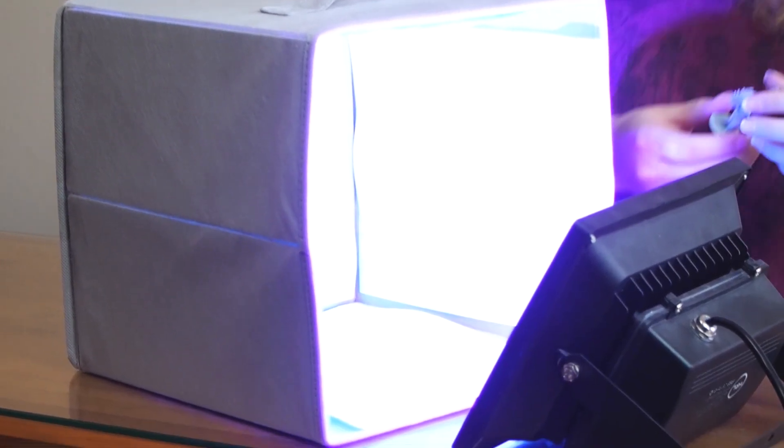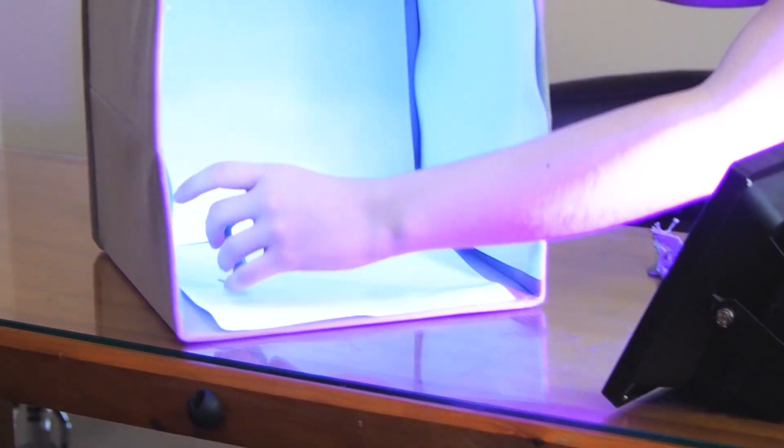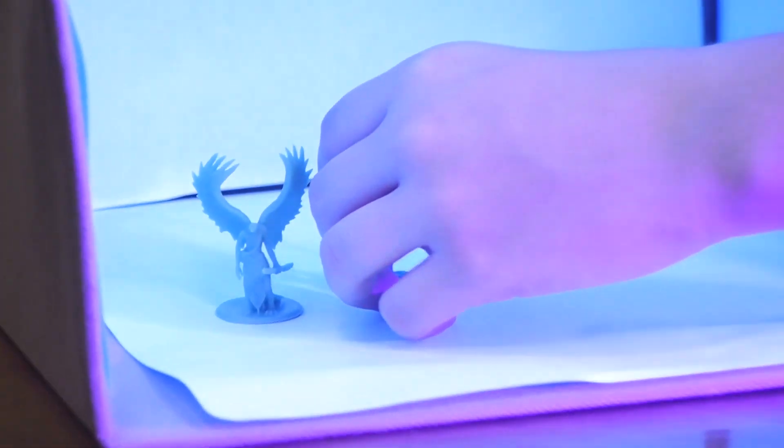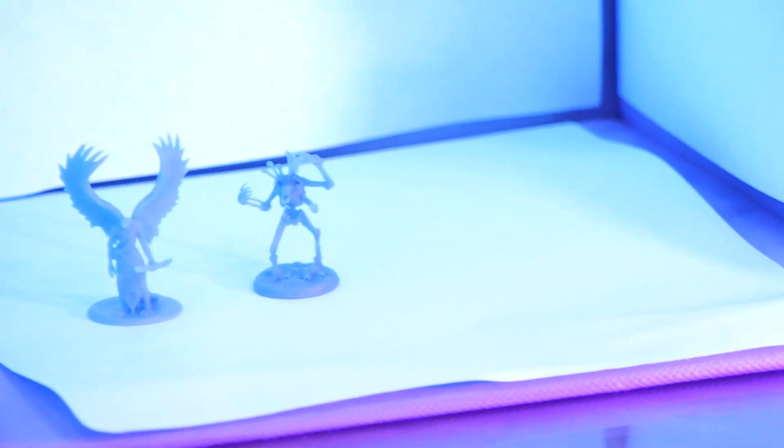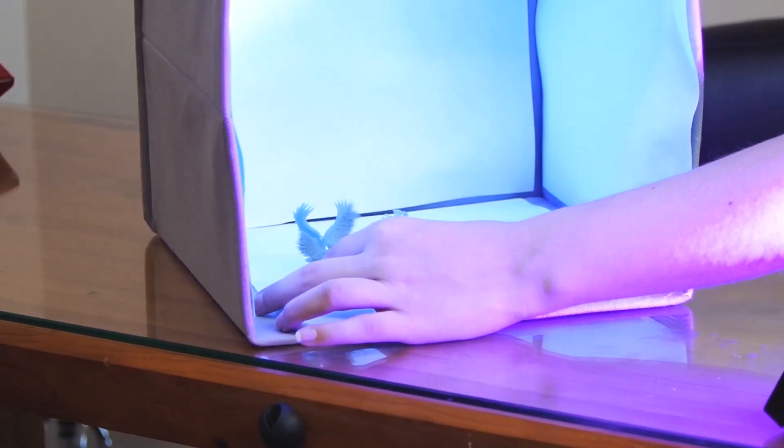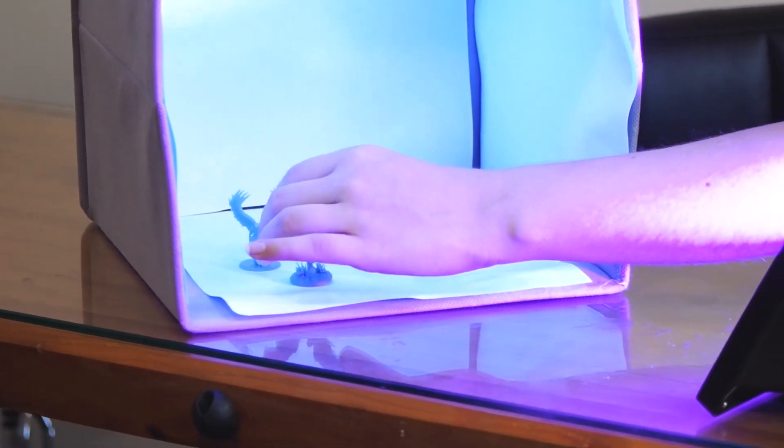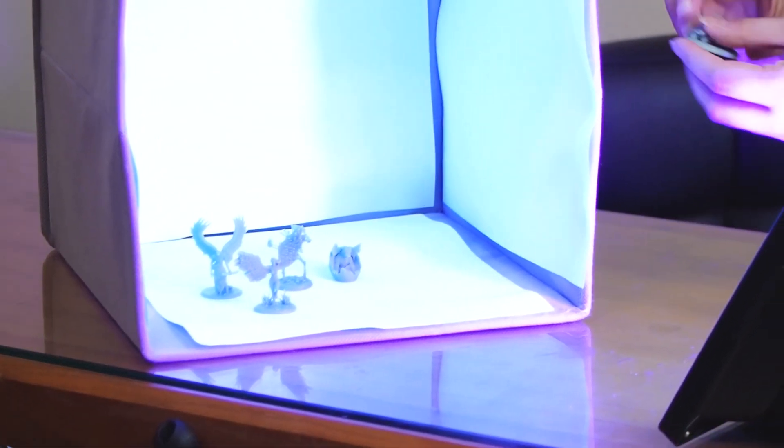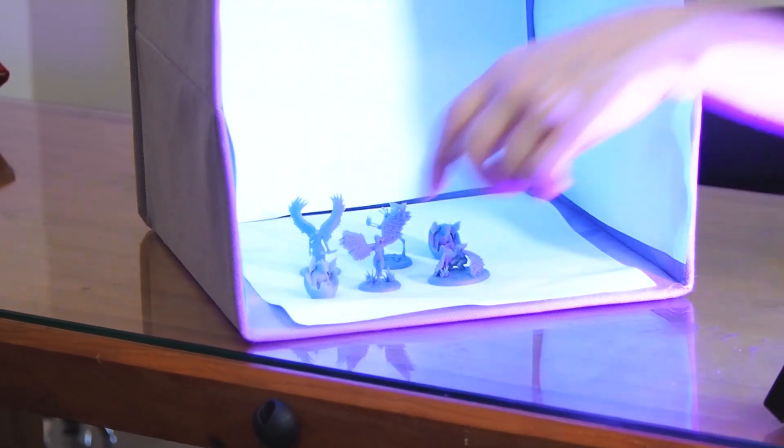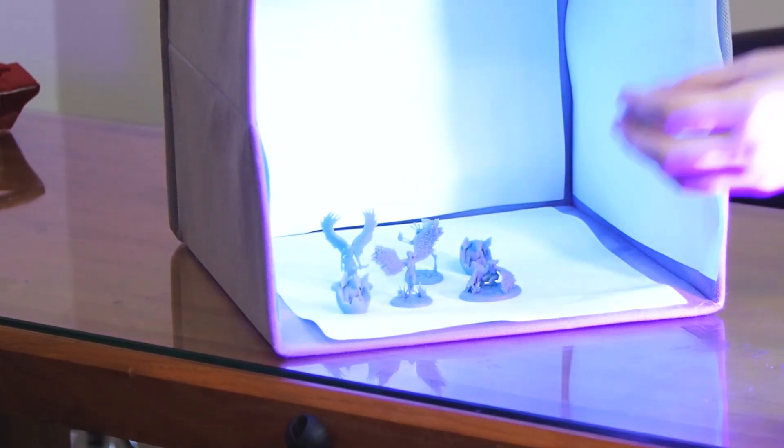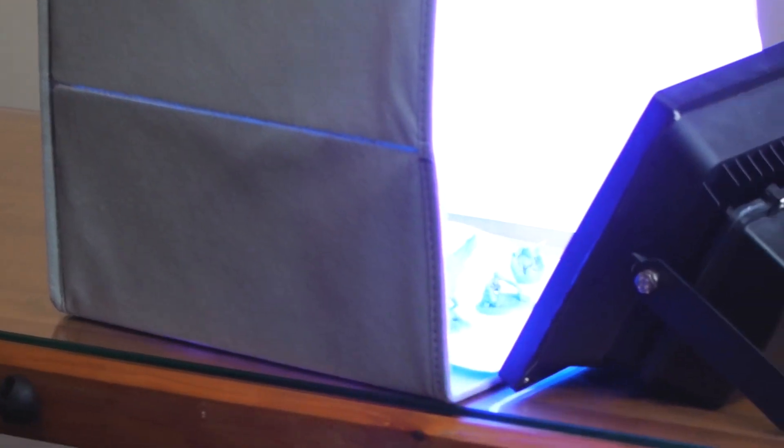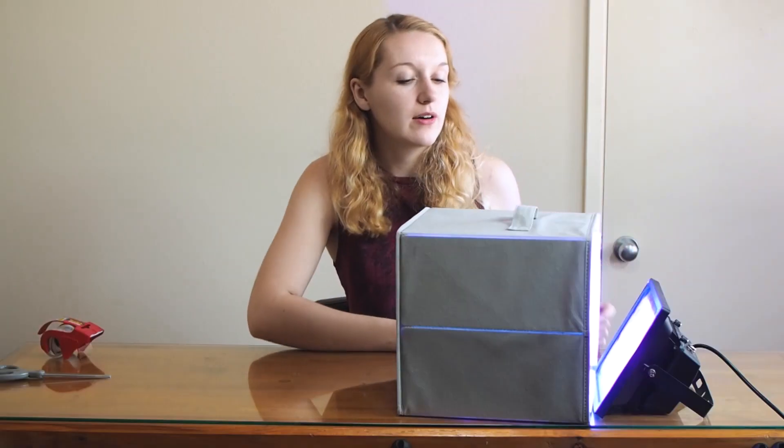And then all I do is I just take my minis. I'm just going to set them kind of in the middle. Something I noticed while I was making the box, I could have just used a white box. That probably would have worked just as fine. Or using double-sided tape would have been helpful. So all of these are about the same size. The baby dragon, since they're a little denser and a little bit heavier, will take the most time to cure.